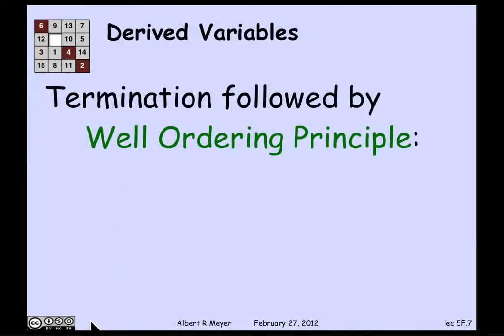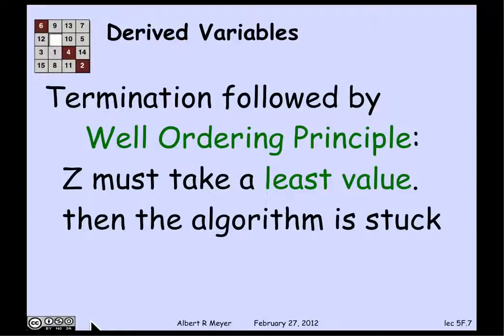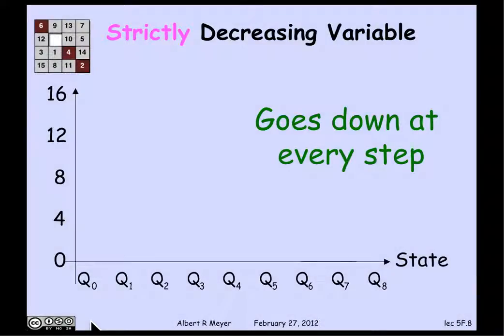So that implies, by the well-ordering principle, that it will take a minimum value. And what we know about the minimum value of a strictly decreasing variable is that the algorithm is stuck, because once z has reached its minimum value, if the machine took another step, then it would get smaller. So it means that the algorithm has to terminate. This gives you a general methodology for proving termination: find a non-negative integer valued strictly decreasing variable. Guarantees the program stops.